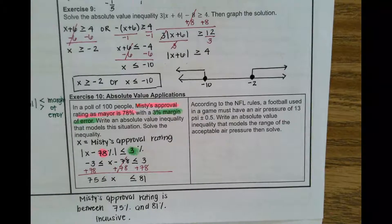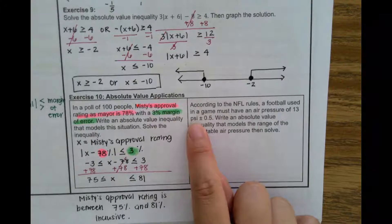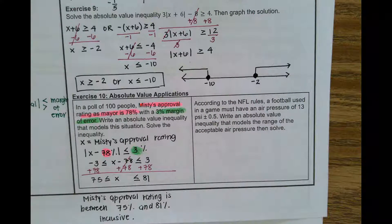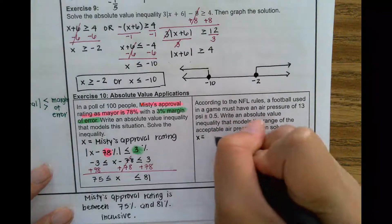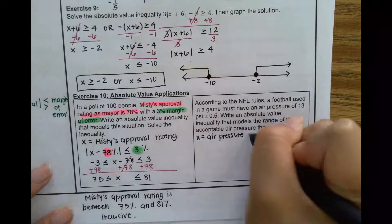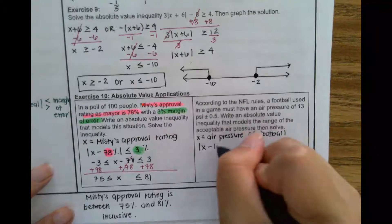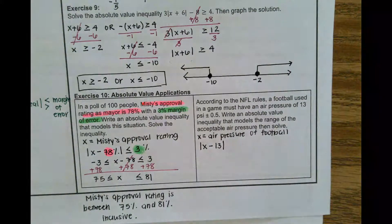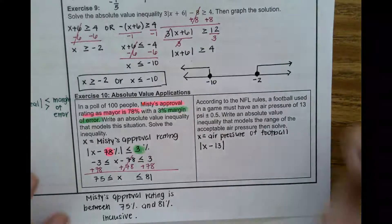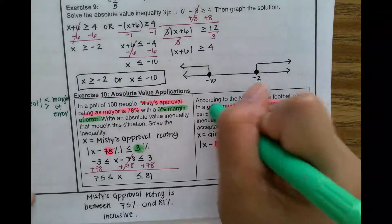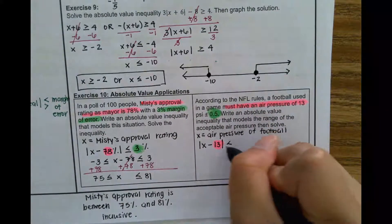According to NFL rules, a football used in a game must have an air pressure of 13 PSI, and we can be off by plus or minus 0.5. We want to write an absolute value inequality that models this range of acceptable air pressure and solve it. Here, x equals the air pressure of the football. Ideally it should be 13 PSI; however, we can be off by 0.5, so it has to be less than or equal to 0.5 away.